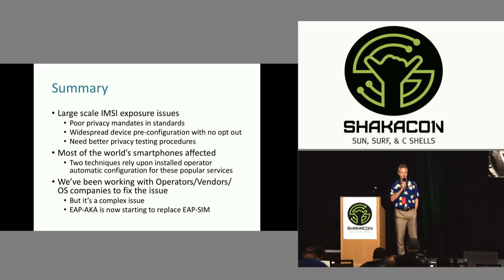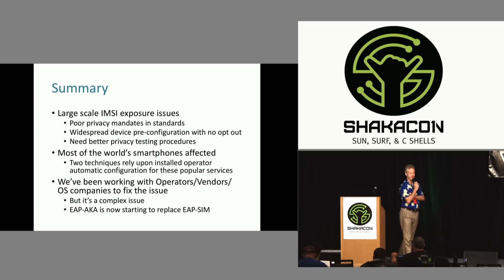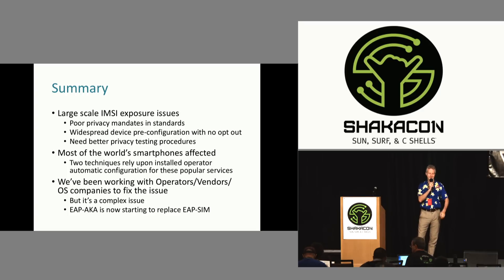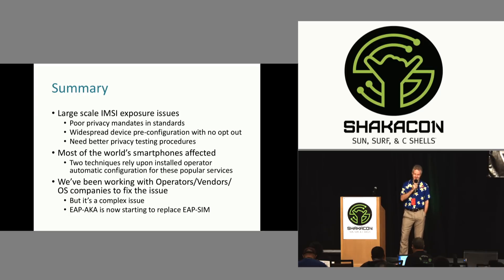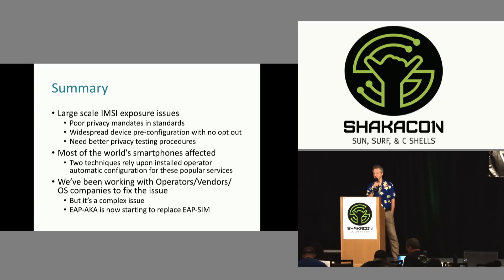Summary: large-scale IMSI exposure issues on Wi-Fi, really down to poor privacy mandates in the standards. Maybe if they'd written it stronger, operators would have implemented a stronger solution — or maybe they figured it was just too expensive and would wait until they got leaned on. Widespread pre-configuration with no opt-out meant this stuff happens. It would also be good if some of these entities did a bit more testing for leakage of things like the IMSI and IMEI — these things shouldn't really be flying around the network. You can find this stuff just by running Wireshark in monitor mode, getting your phone to connect, and seeing the IMSI fly by. That shouldn't be happening.